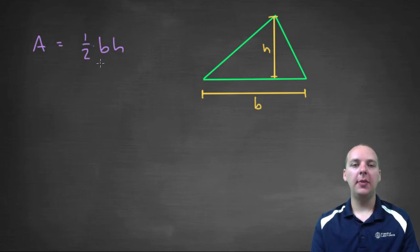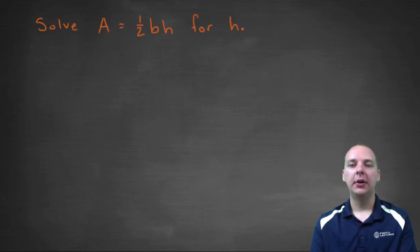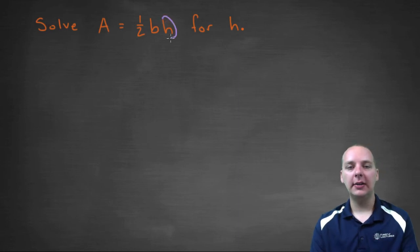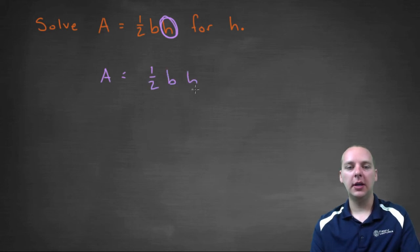But let's say we were asked to solve the area formula for height, instead of having it solved for area. The height is right here. So how do you get rid of the one-half and how do you get rid of the B? Let's do that. A equals one-half B times H.